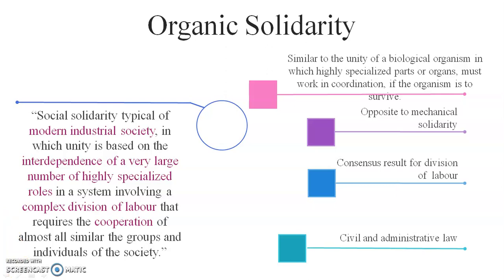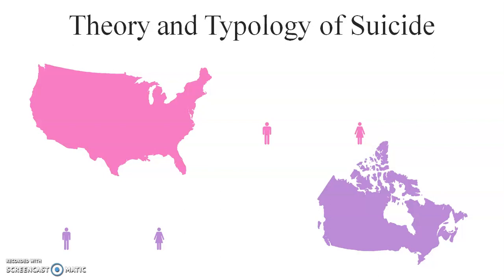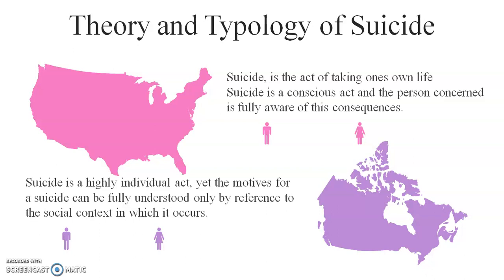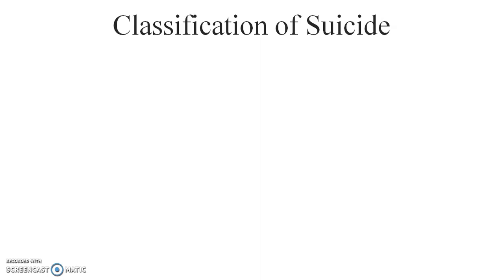The third contribution is Durkheim's theory and typology of suicide. Suicide is the act of taking one's own life — a conscious act where the person is fully aware of the consequences. Although suicide is a highly individual act, the motives for it can only be fully understood by reference to the social context in which it occurs. Durkheim identified several classifications of suicide.